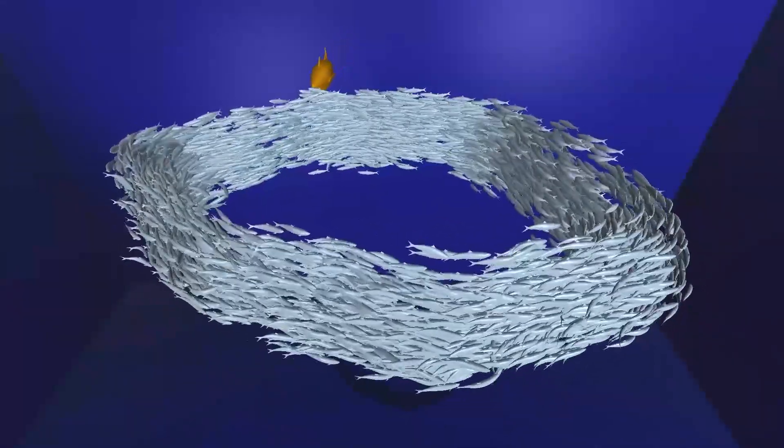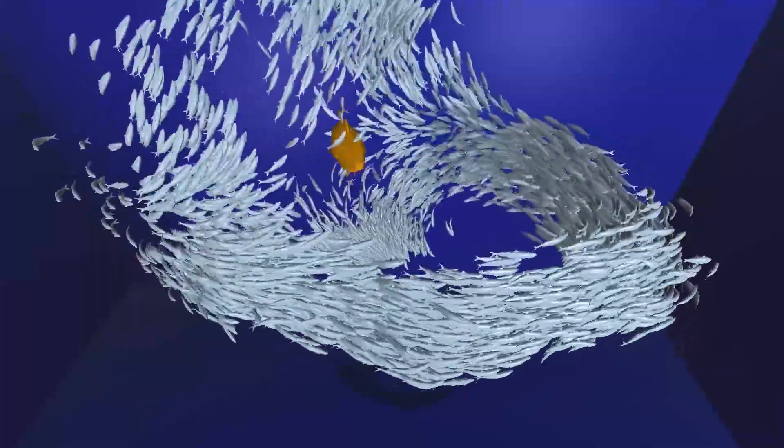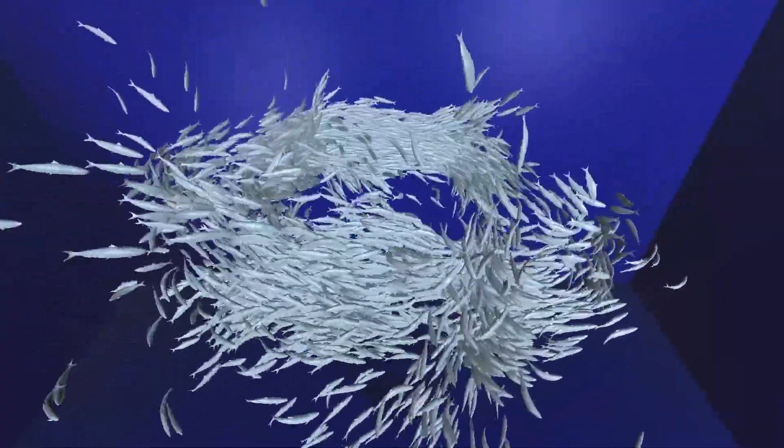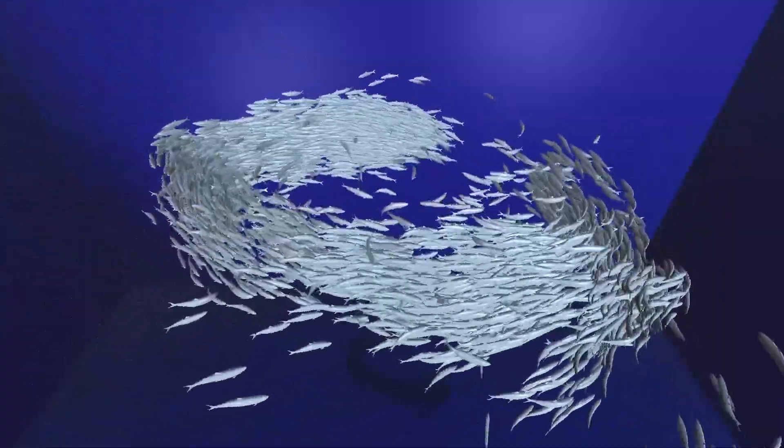Here, a predator plunges into the school of pilchards. Although the pilchards scatter away to escape once, they gather back to the original tube course once the predator goes away.